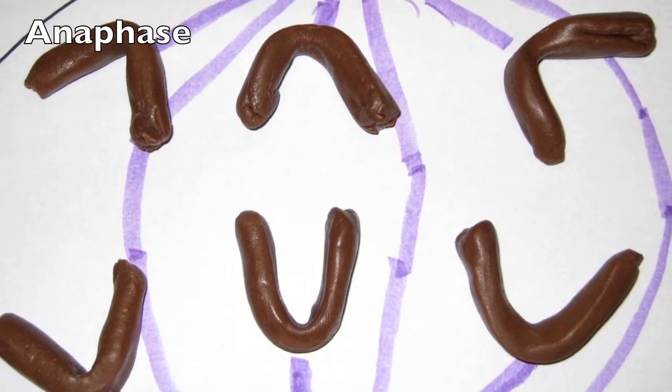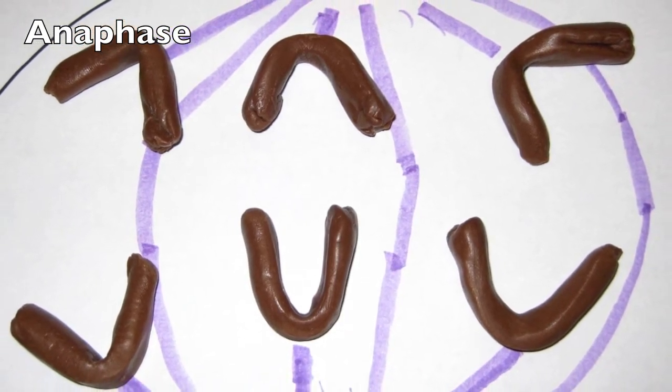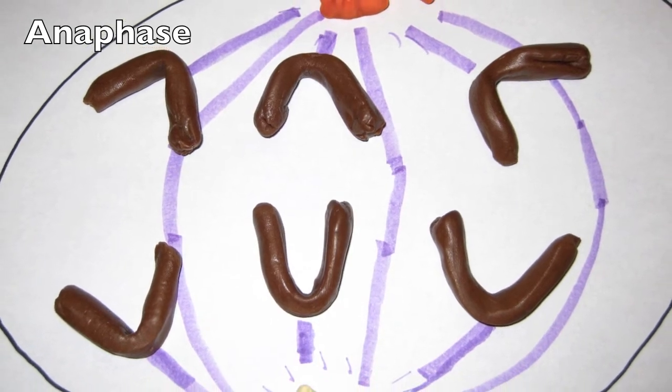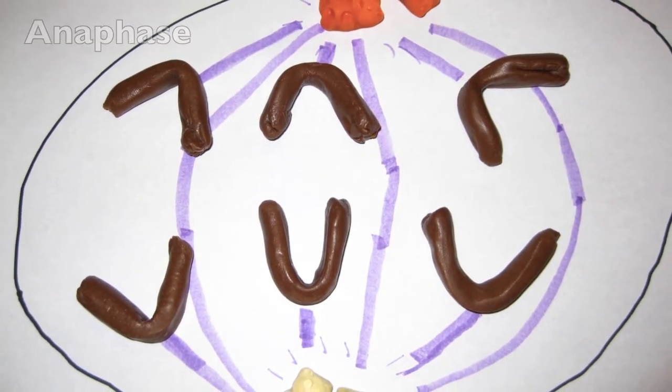The shortest stage of mitosis is anaphase. Here, each chromatid is pulled apart and becomes a chromosome. In this phase, the number of chromosomes have doubled.